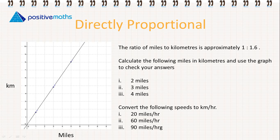The ratio of miles to kilometers is approximately 1 is to 1.6. So miles to kilometers, 1 is to 1.6. What this is telling us then is one mile is equal to 1.6 kilometers.